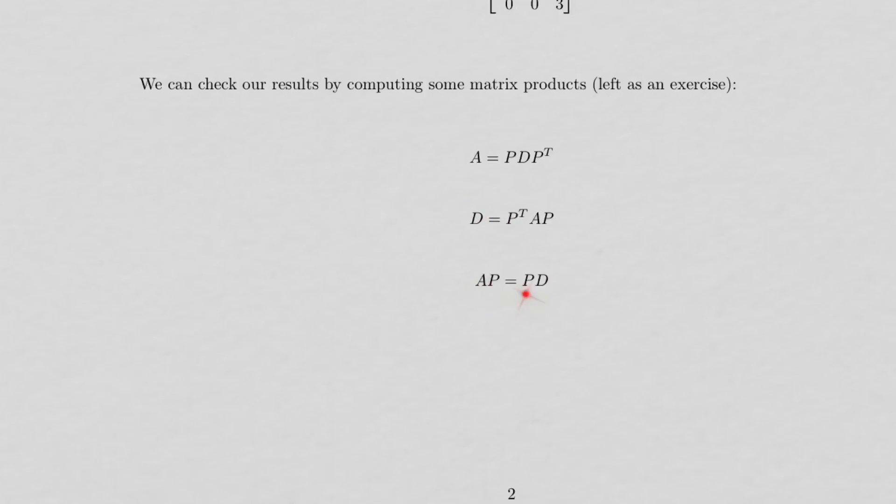Or you could just do AP times PD. That way you don't have to figure out what P transpose is. And if these two products are equal, then your factorization is correct.